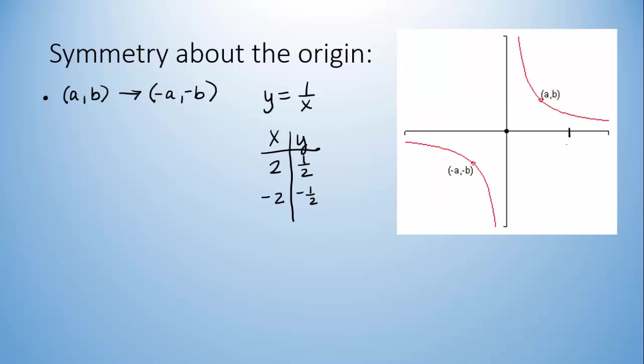Let's see if that makes sense. Let's say this is (2, 1/2) right here. So if we go over here to negative 2, and we go down, similar amount, here it is.